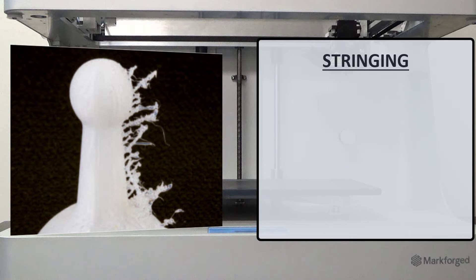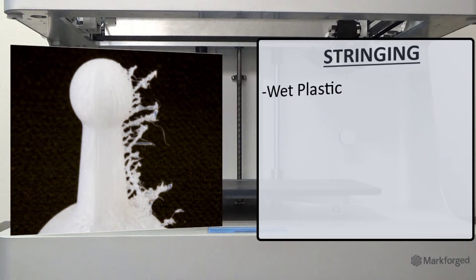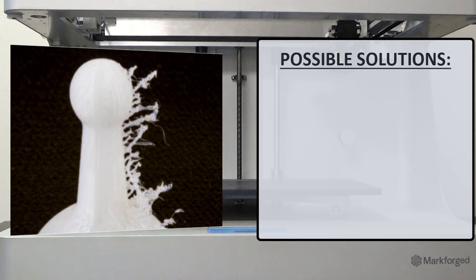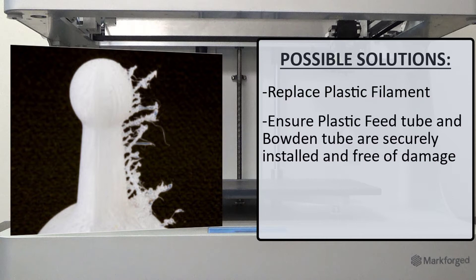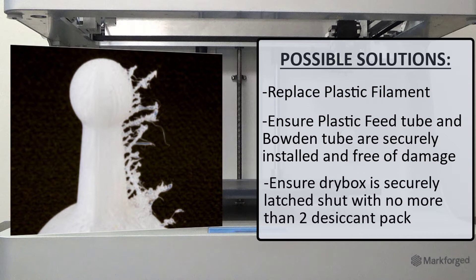The cause of this issue would be wet plastic. The recommended troubleshooting steps would be to replace the current plastic filament, ensure that the plastic feed tube and plastic Bowden tube are securely installed and free of damage, and lastly to ensure that the dry box is securely latched shut with no more than two desiccant packs.